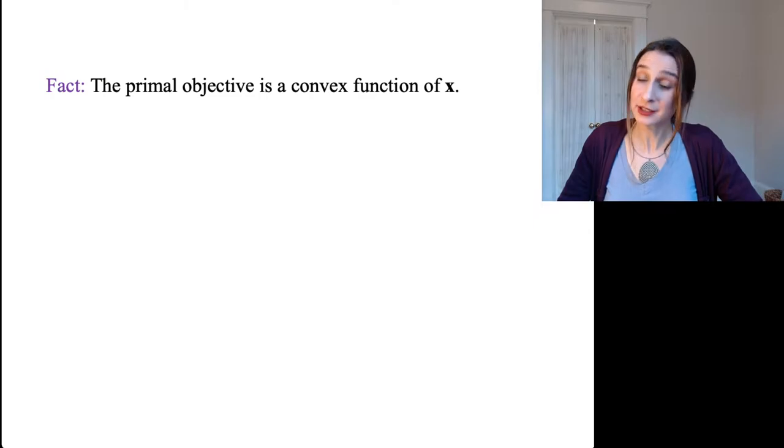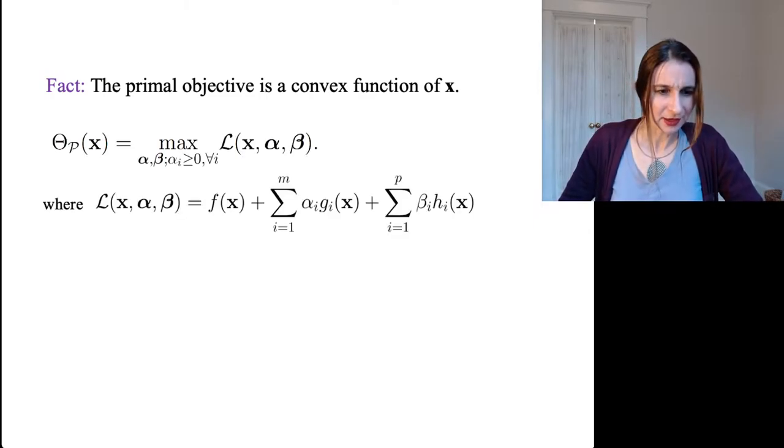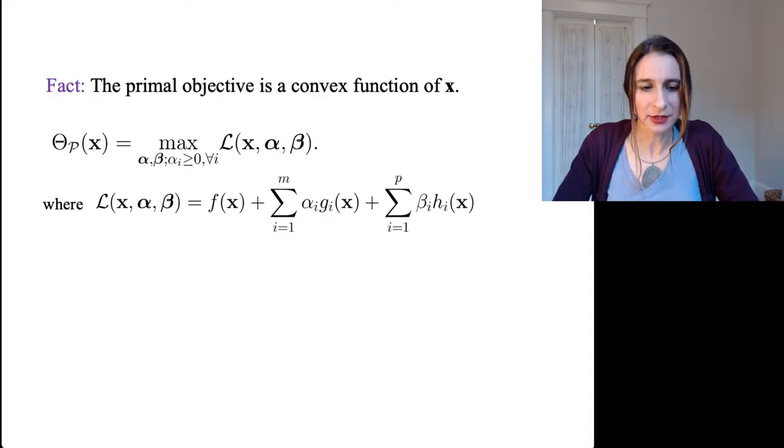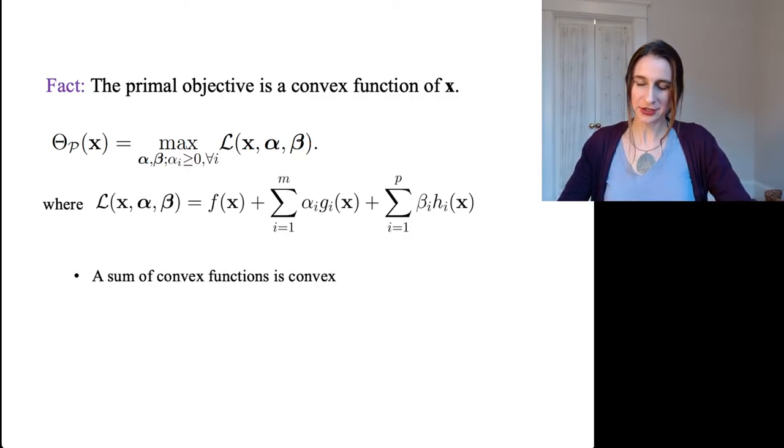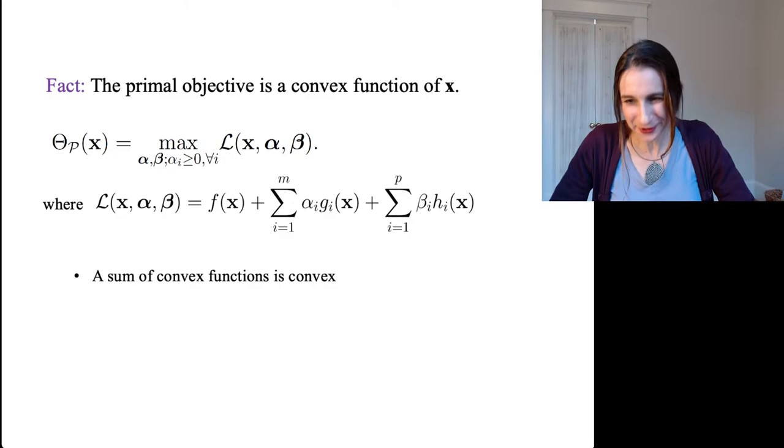Now, as it turns out, the primal objective is a convex function of x. Okay, so why would that be true? All right, so let us write down the primal here as again the maximum of the Lagrangian with respect to alpha and beta.